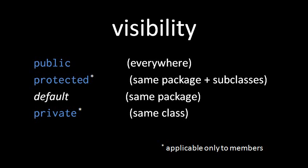For example, if in the class Cat we have a protected method named meow, then we can invoke meow anywhere in the same package, as well as in any subclass of Cat, even those not in the same package. The thinking behind protected is that a descendant class has a special relationship with its ancestor, and therefore it may be reasonable for that descendant to see more of its ancestor's inner workings.